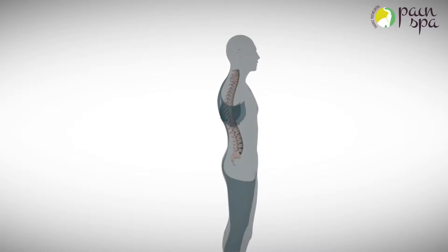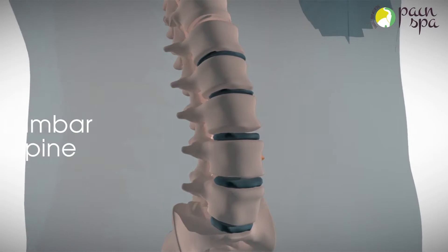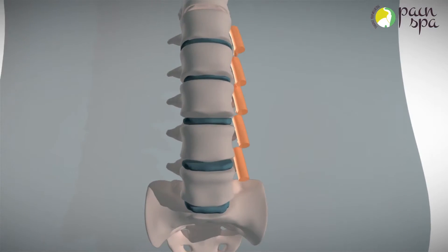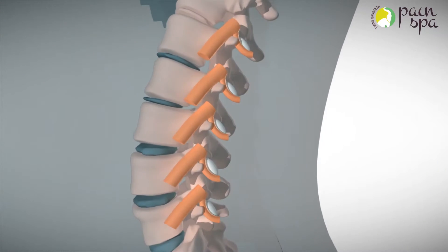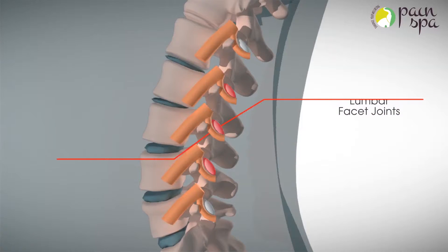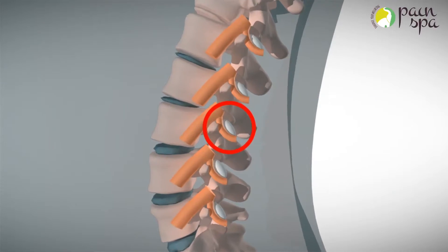Lumbar medial branch blocks are diagnostic injections performed to identify painful lumbar facet joints. Facet joints are little joints situated throughout the spinal column and can be a common source of back pain. Lumbar medial branches are small nerves that carry pain impulses from lumbar facet joints to the brain.